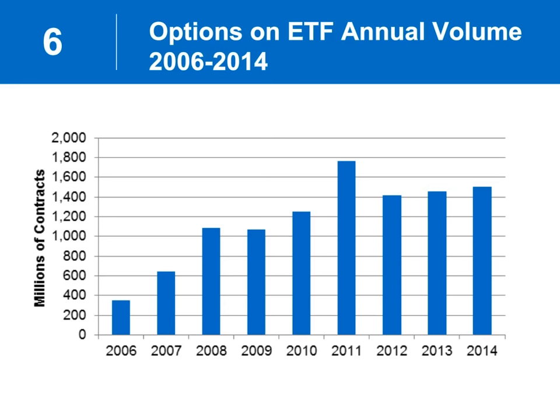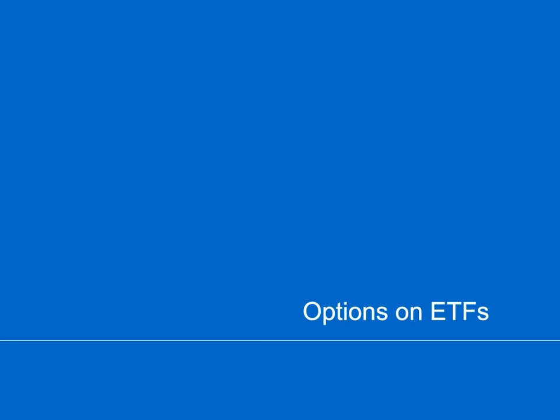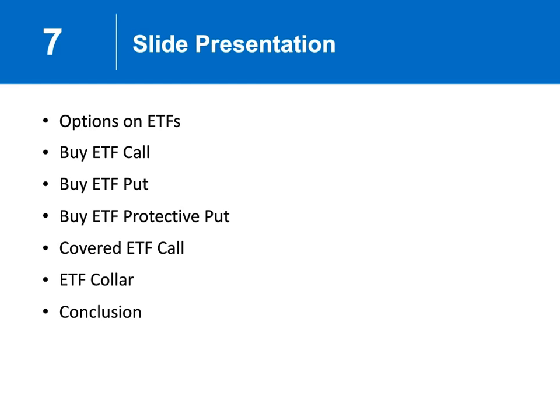We're going to cover exactly what options are on ETFs. We'll talk about five approaches — some may call them strategies — buying an ETF call, buying an ETF put, buying an ETF protective put, doing a covered call for an ETF, and then rolling that into a collar. That's what we're going to cover over the next 50 minutes or so.